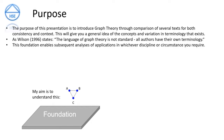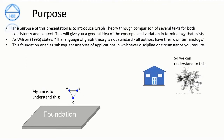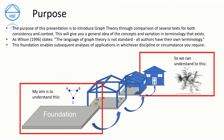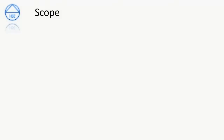This foundation enables subsequent analyses of applications in whichever discipline or circumstance you require. My aim is to establish a firm foundation through wide consultation of available text to understand the basic principles of graph theory concepts. This will enable us to understand complicated terms and concepts in network theory and its applications such as the al-Qaeda communications network. Once the foundation is set we can move on to more complicated terms and concepts. Throughout this presentation we will cover the consulted references, then Part 1 — this presentation — the basics of graph theory.